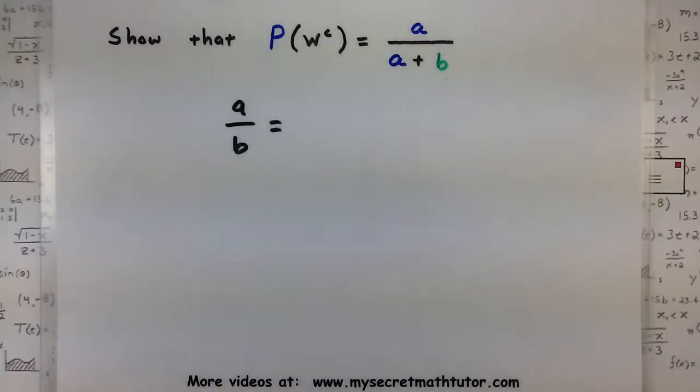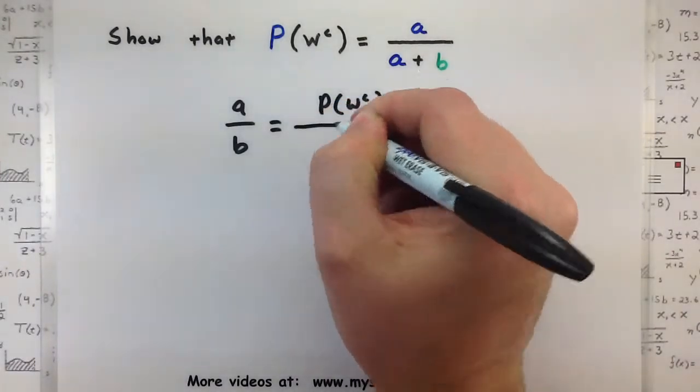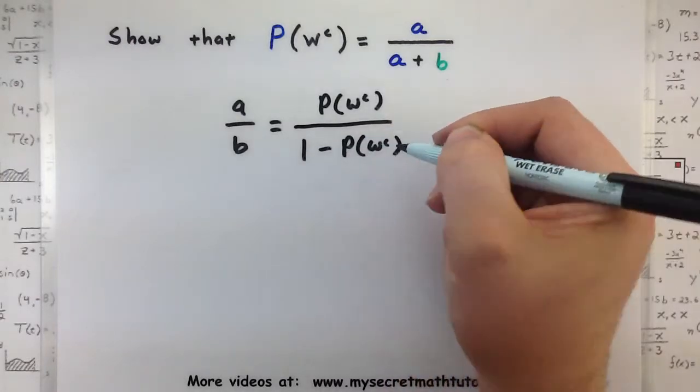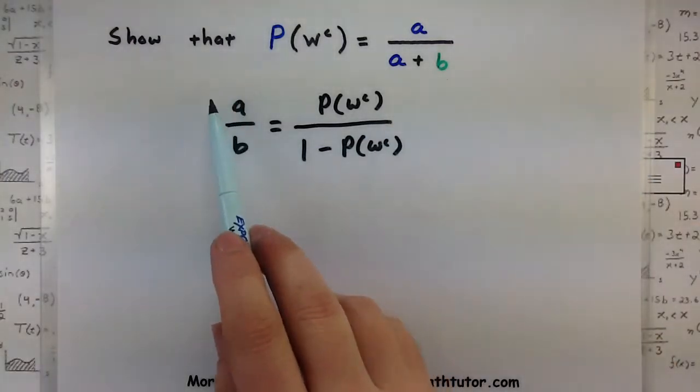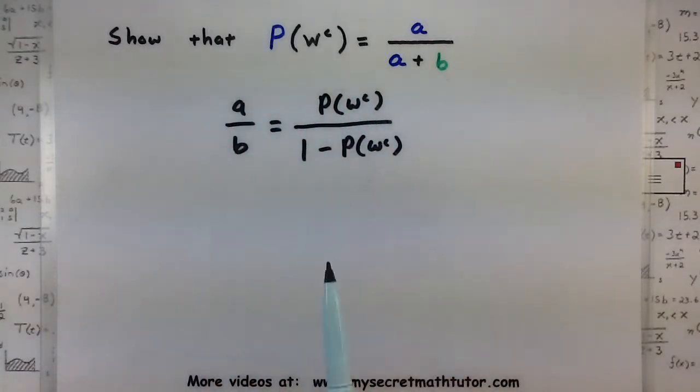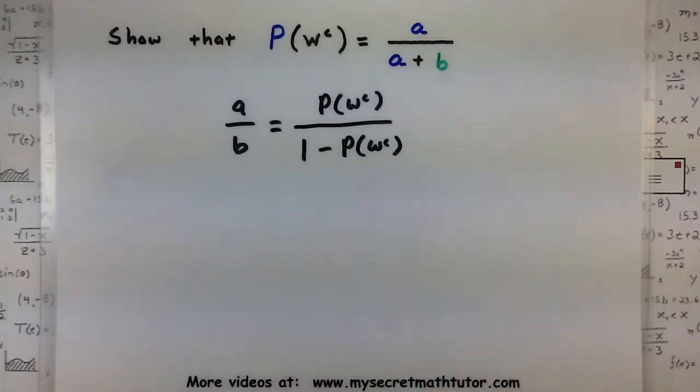So suppose we wanted to show why the probability of not winning really was A over A plus B. What we could do is start with this equation right here. So assume that A over B equals the probability of not winning over one minus the probability of not winning.